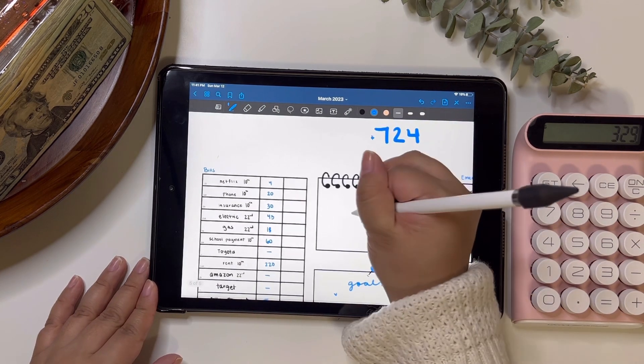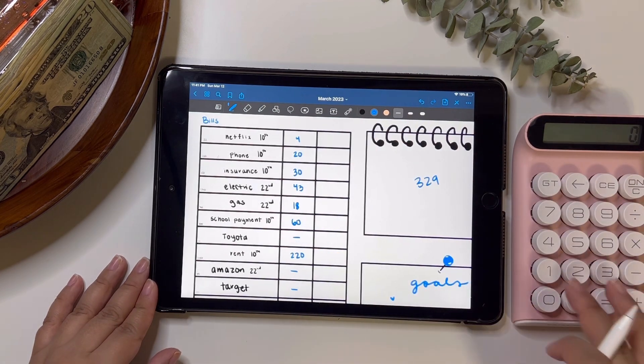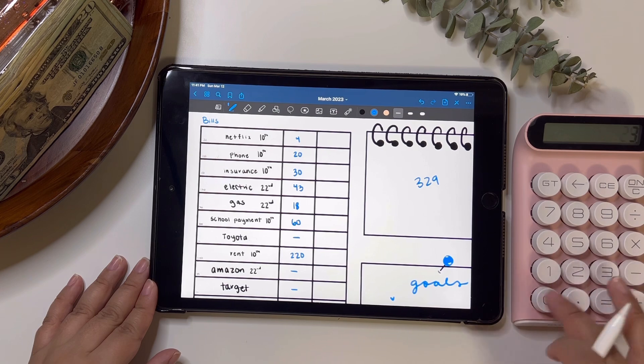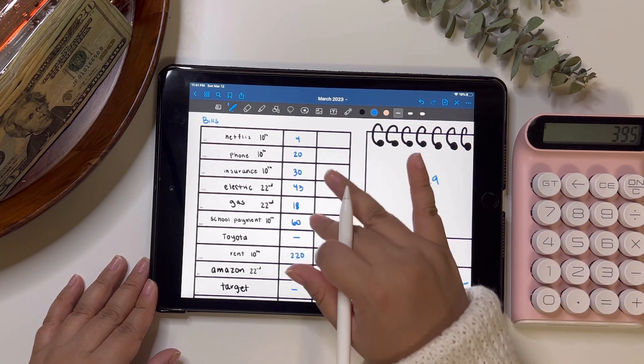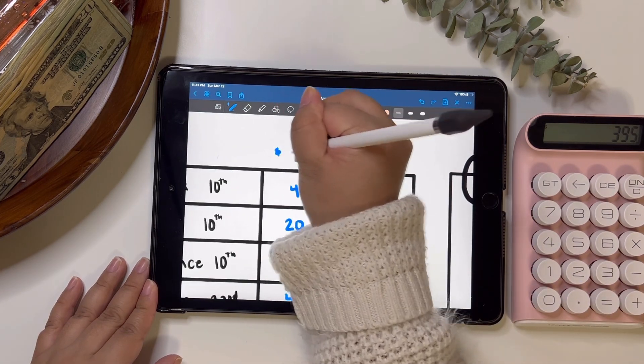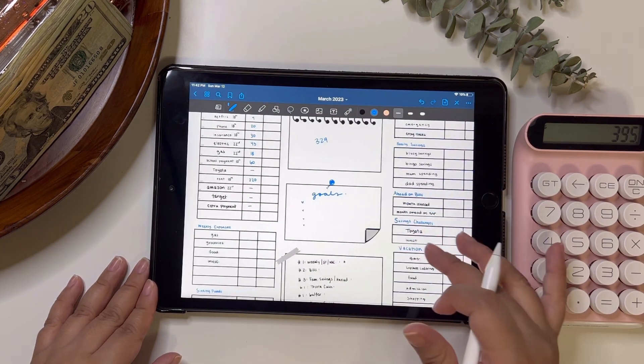So that leaves us with $329. So I just want to add up all my bills to see what we have. So $4, $20, $30, $43, $18, $60, and $220. So $395 in bills, which is not too bad, I don't think, at least on a weekly basis. So we have $329 left.